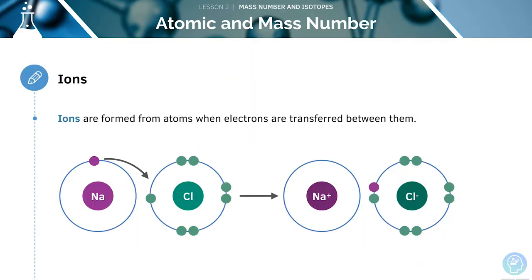When electrons are transferred from one element to another, ions are formed. The element that loses an electron becomes positively charged and is called a cation, whilst the one that gains an electron becomes negatively charged and is called an anion.